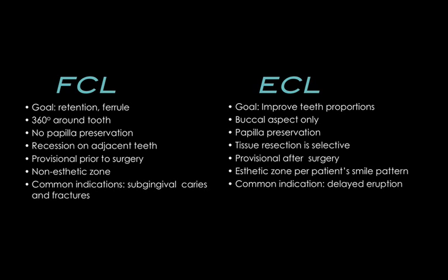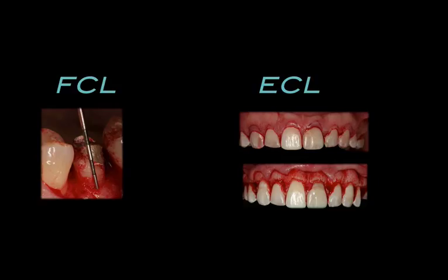The common indications for functional crown lengthening are patients that have experienced a tooth breaking subgingivally or having subgingival caries. For aesthetic crown lengthening, the common indications are patients with delayed eruption patterns where tooth structure is hiding under the gum tissue and needs to be exposed, or patients that have attrition and compensatory eruption. Both are resective crown lengthening procedures, but they are very different in their goals, their side effects, and their common indications.